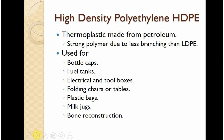The high-density version has more molecules together, so it's going to be stronger because there's going to be less branching involved. This is going to be more for things like bottle caps, fuel tanks — flexible, but not really. Electrical items and toolboxes — if you've got those really strong plastic toolboxes, you get the idea. Folding chairs, folding tables like from Walmart. Plastic bags are flexible because they can tear, but they're also relatively strong. Milk jugs. This can also be used in bone reconstruction — it is hard enough that when you put it in where a broken bone was, it can be used that way.